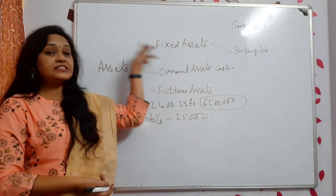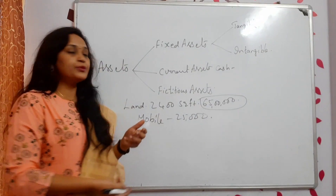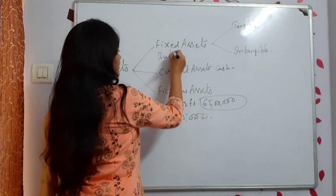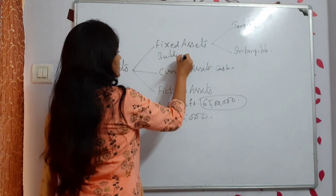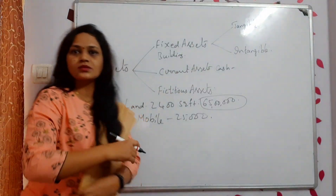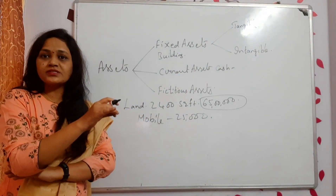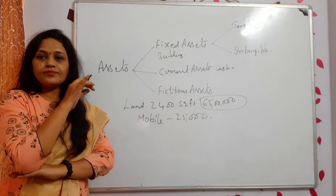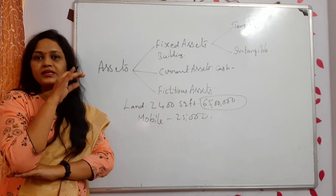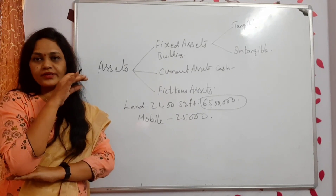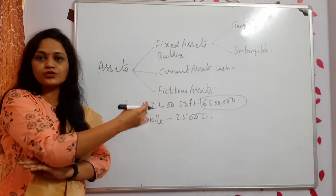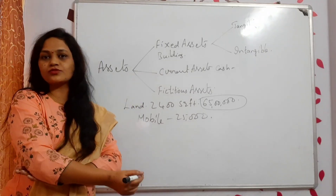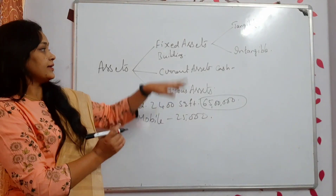Examples of fixed assets: buildings — when you purchase a building, you plan to keep it for longer time, more than a year, more than 10 or 20 years. Some people want to spend their lifetime there. Machinery also comes under fixed assets.